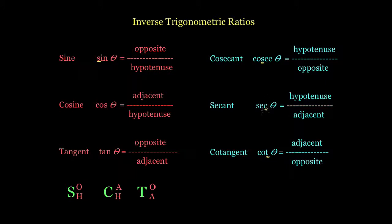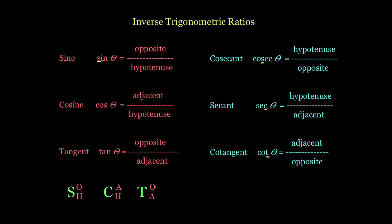If I see a 'C' as the third letter, I know it comes from cosine and is the inverse of cos. Cos is adjacent over hypotenuse, so sec is hypotenuse over adjacent. And if I see a 'T' as the third letter, it's related to tan. Tan is opposite over adjacent, so the inverse — cotangent — is adjacent over opposite.